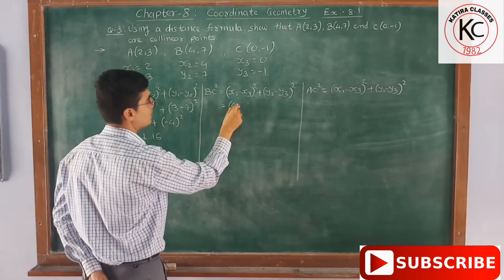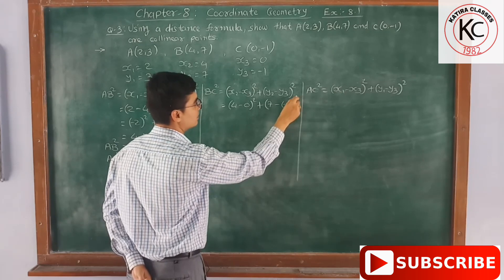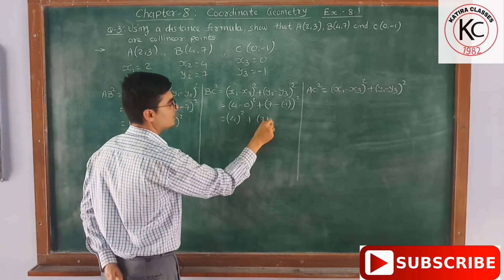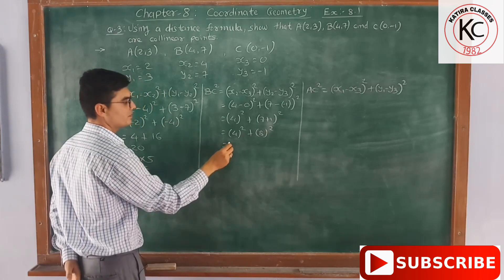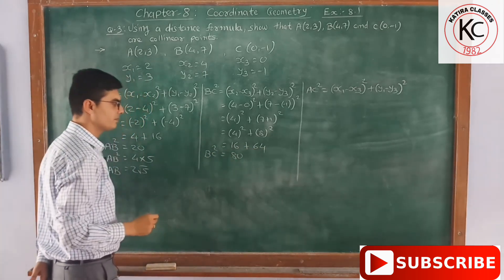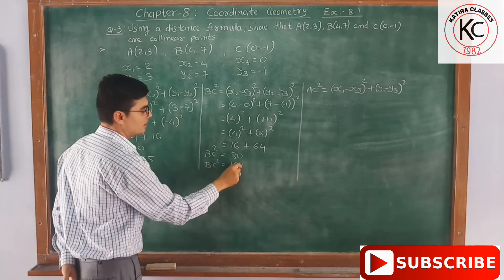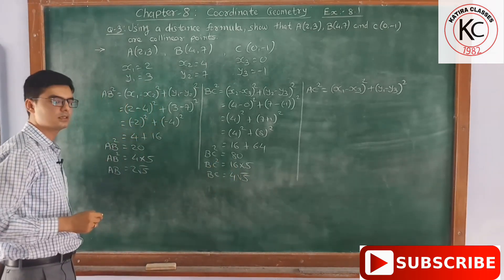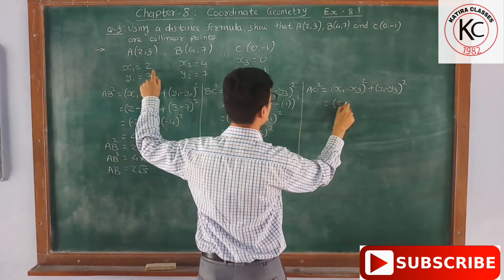Now for BC²: value of x2 is 4 and x3 is 0, y2 is 7 and y3 is minus 1. So (4 − 0)² + (7 − (−1))² = 4² + 8² = 16 + 64 = 80. We cannot directly find the root of 80, so we factorize: 80 = 16 × 5. Root of 16 is 4 and root of 5 is √5, so BC = 4√5.